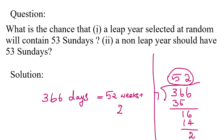The remainder is 2 days. So in 366 days, we have 52 complete weeks plus 2 extra days. In 52 weeks, we already have 52 Sundays, because every week has one Sunday. But the question asks for 53 Sundays, so that is the probability we need to find.